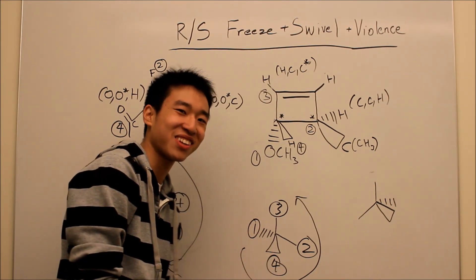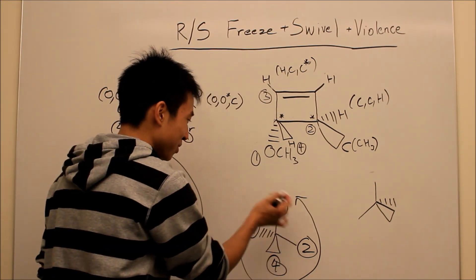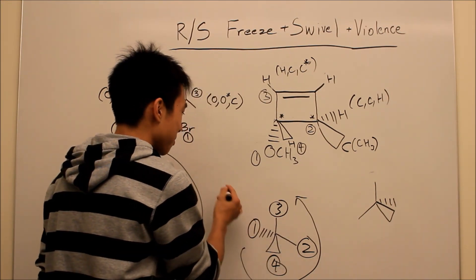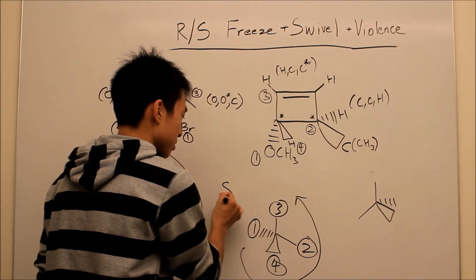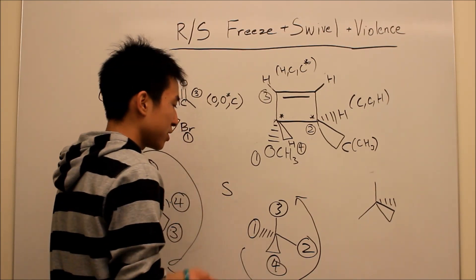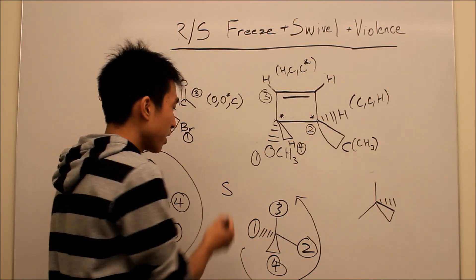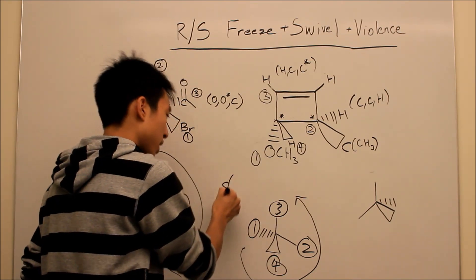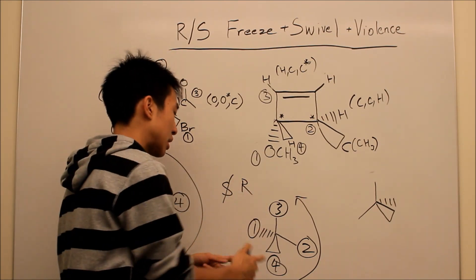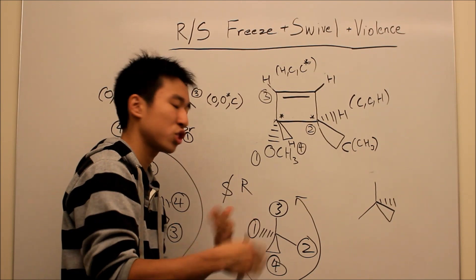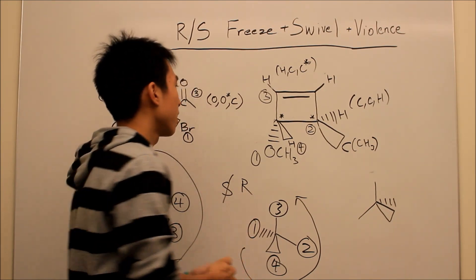I just realized you couldn't see that. It's going 1, 2, 3 — that's counter-clockwise, so it's S. And just like before, if the lowest group is in the front, you've got to cross out your S — it's actually going to be R. I like this because it gives you a second check just in case you forget.